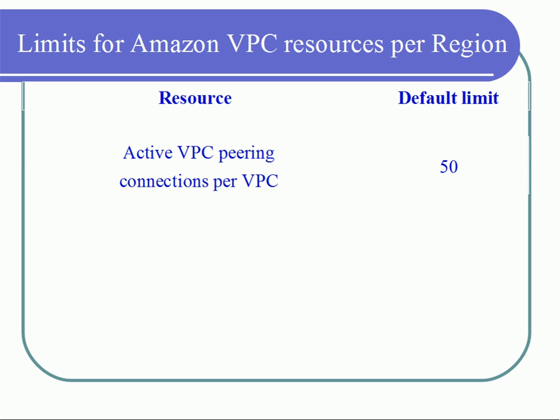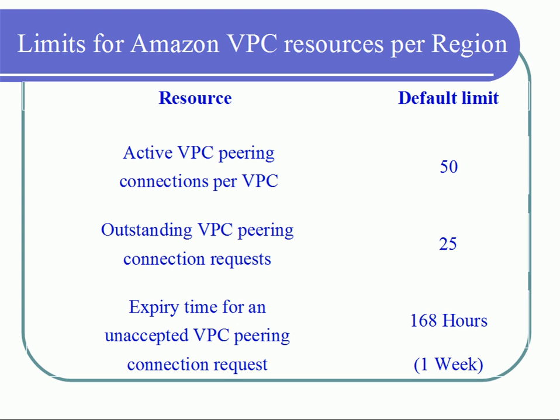Active VPC peering connections per VPC can be up to 50. Outstanding VPC peering connection requests can be up to 25 — for establishing VPC peering, we send a peering request, which the other side must accept. Up to 25 peering requests can be in the queue. The expiry time for an unaccepted VPC peering connection is 1 week, that is 168 hours by default.